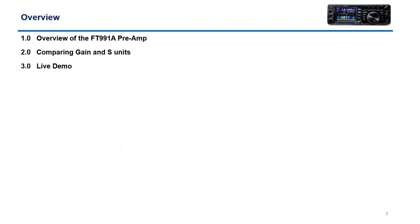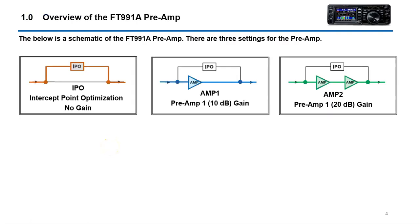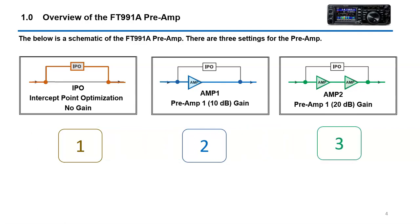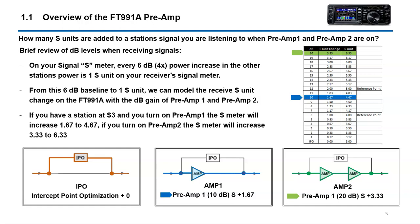We're going to go over the preamp settings, S units, and the demo. On the FT991A, there are three preamp settings: IPO, which means no gain; preamp 1, which is 10 dB gain; and preamp 2, which is 20 dB gain. So what is a dB and how do you relate it to S units? I'll show you how many S units are added to a station's signal when preamp 1 and preamp 2 are turned on. The key rule: every 6 dB, or 4 times power increase, equals 1 S unit on your receiver's meter. From this 6 dB to 1 S unit baseline, we can model the receive S unit change on the 991A with the dB gain of preamp 1 and preamp 2.